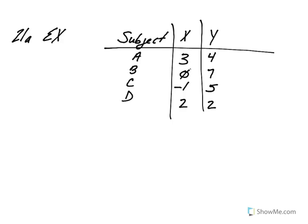This is the solution for problem 21 of chapter 1. Two scores, X and Y, are recorded for each of four subjects. For these scores we're asked to find the value of each expression.